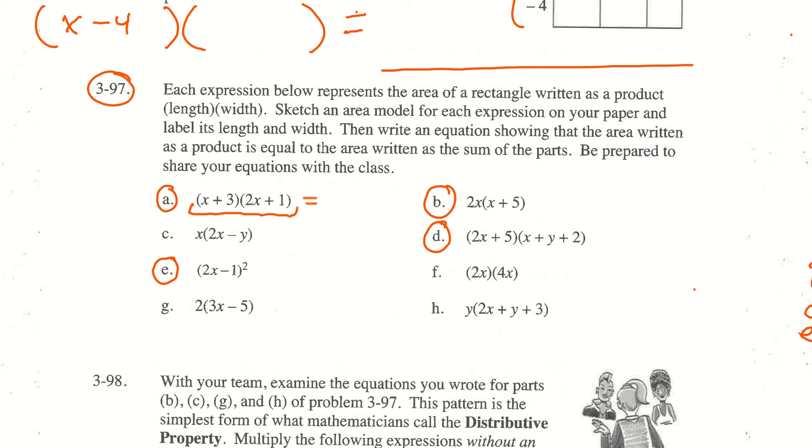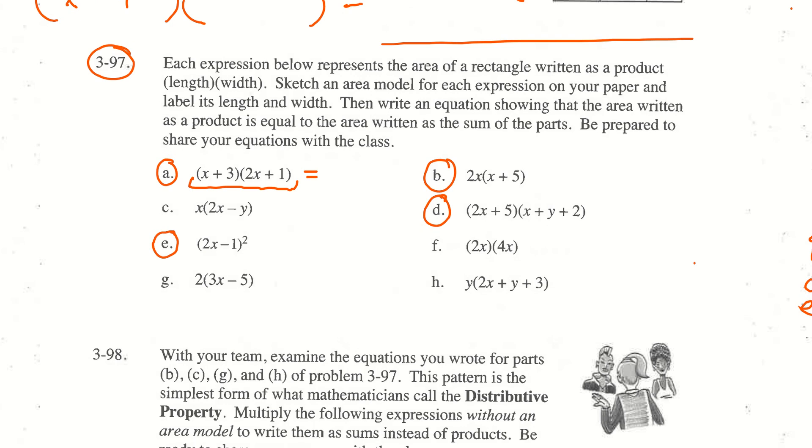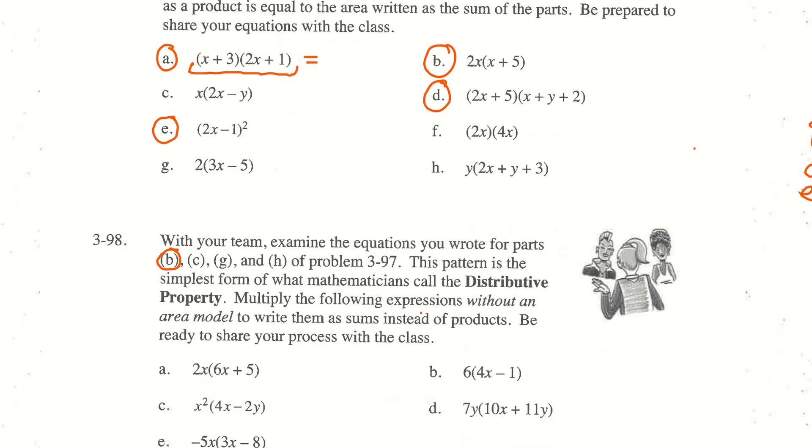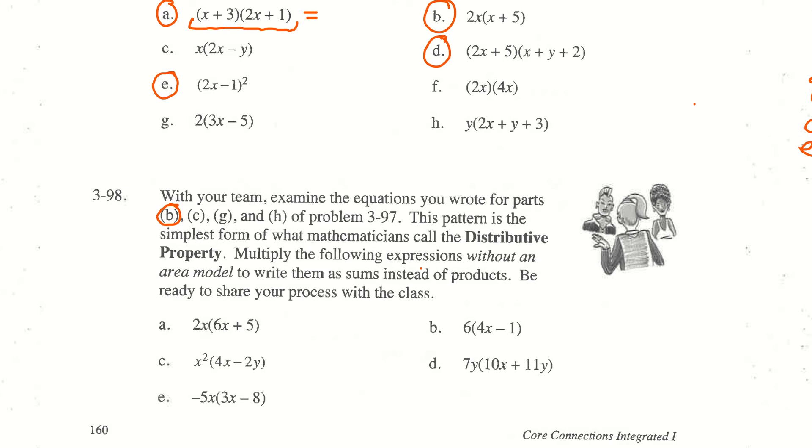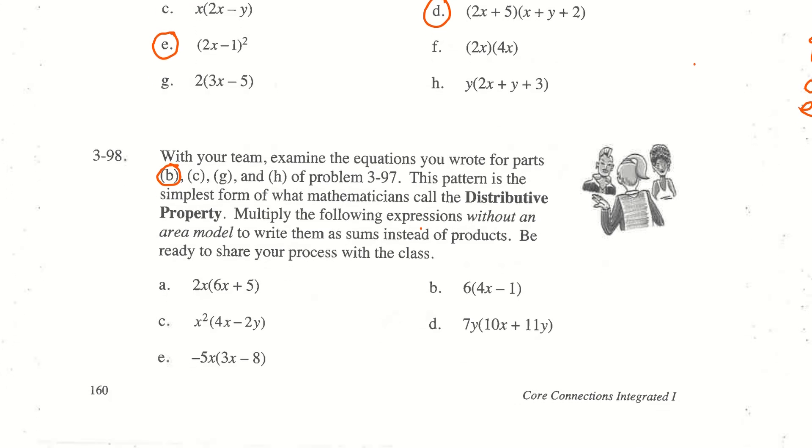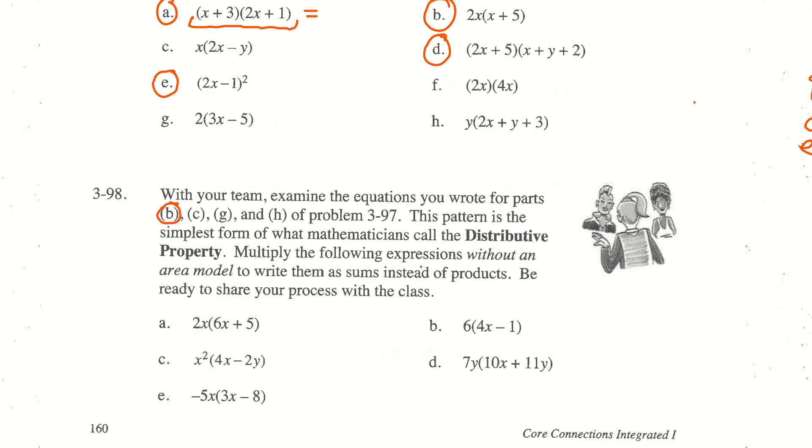In question 98, the only one I asked you to do was b of the ones listed there, so you only did b. But I want you to look at b, and b is an example of what we're calling the simplest form of the distributive property. That's what b is, the simplest form of the distributive property. If you're using this distributive property, especially the simplest form, you don't need an area model.